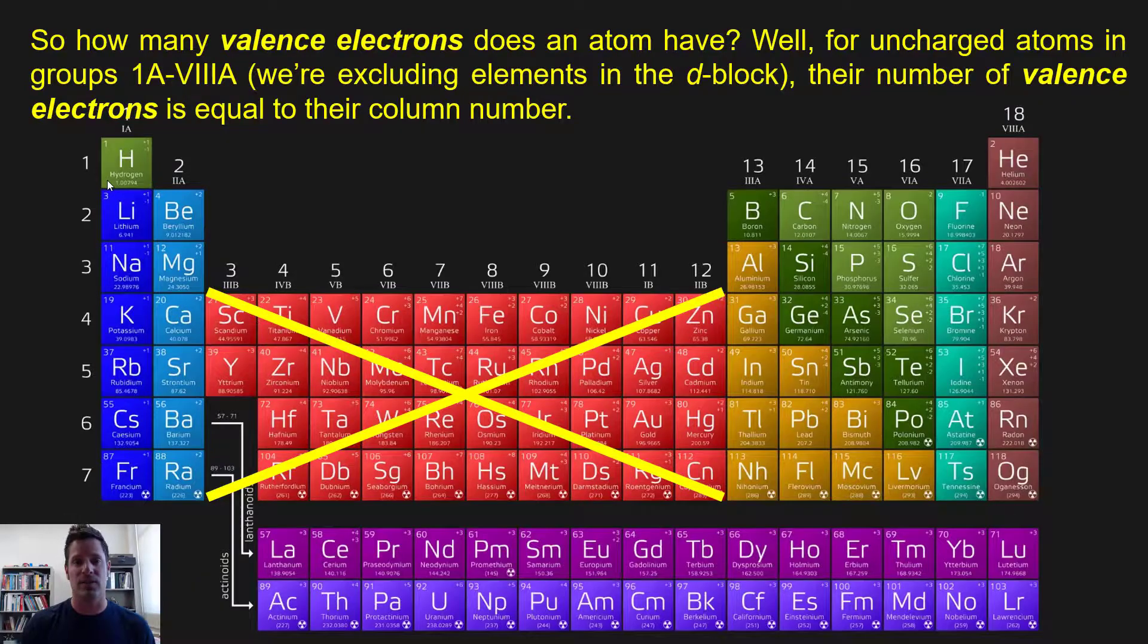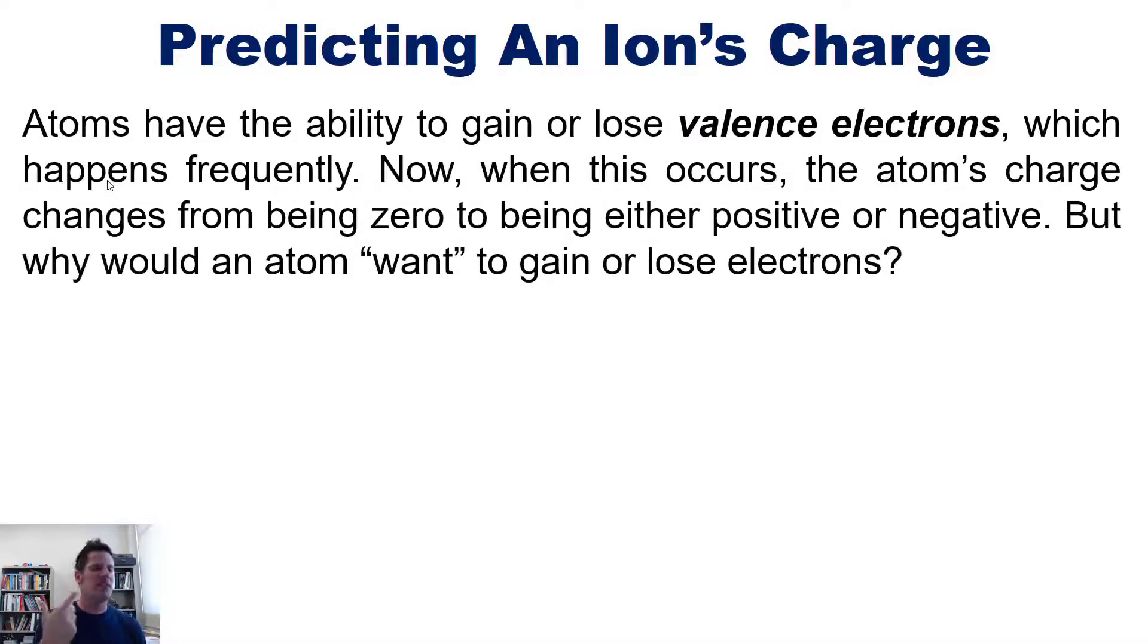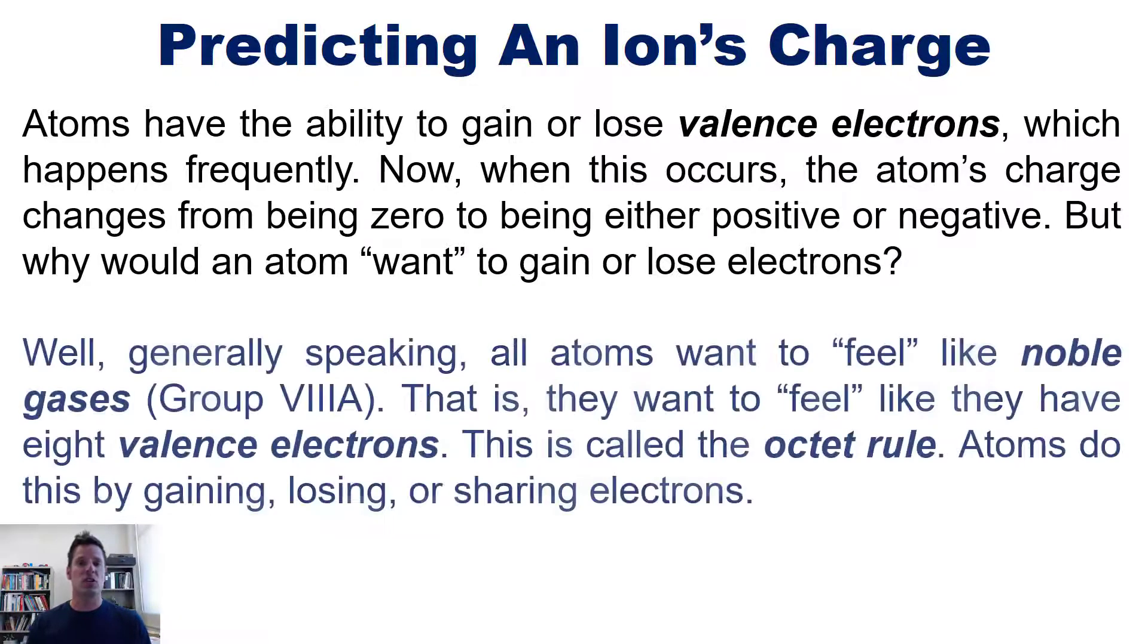With that said, we're now going to talk about ions. So atoms have the ability to gain or lose valence electrons, which happens frequently. Now, when this occurs, the atom's charge changes from being 0 to being either positive or negative. But why would an atom want to gain or lose electrons?